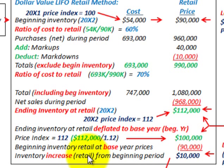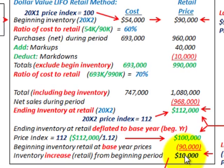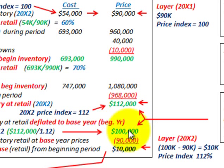Taking our ending inventory at retail of $112,000 and dividing by the price index of 1.12, we get a deflated amount of $100,000. So this ending inventory of $112,000 is actually worth $100,000 when brought back to the base year. Our actual quantity increase would be the beginning inventory at base year retail prices of $90,000 subtracted from the deflated amount of $100,000, giving us an ending inventory increase — an actual quantity increase in dollars — of $10,000. So we've added a layer for 20x2 of $10,000.